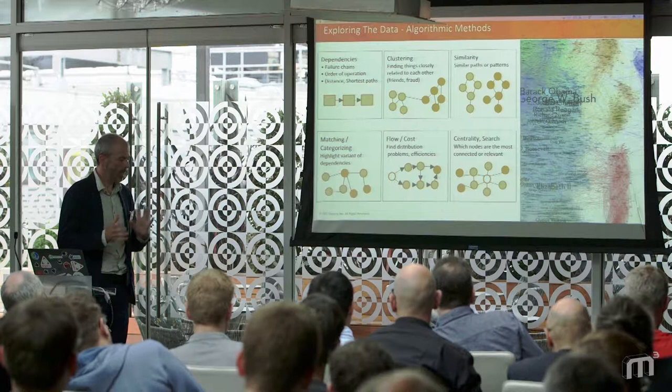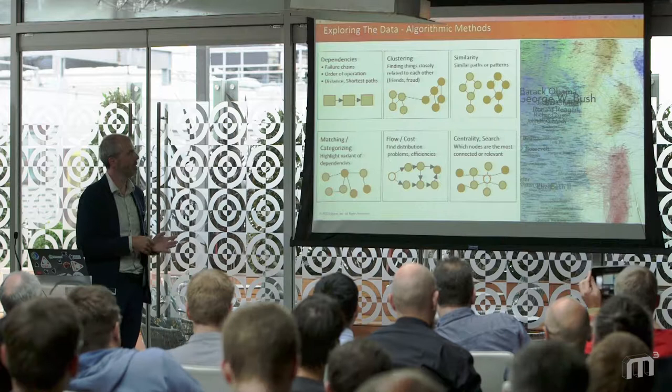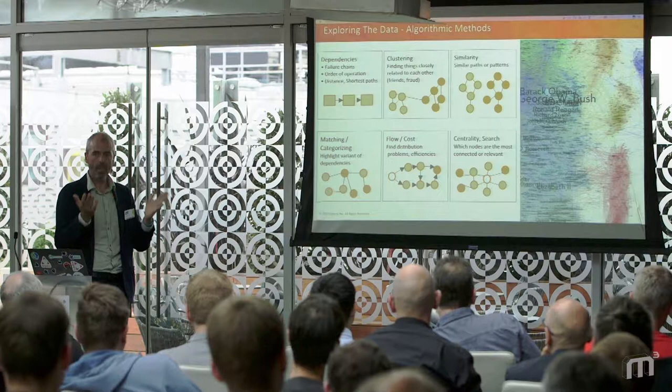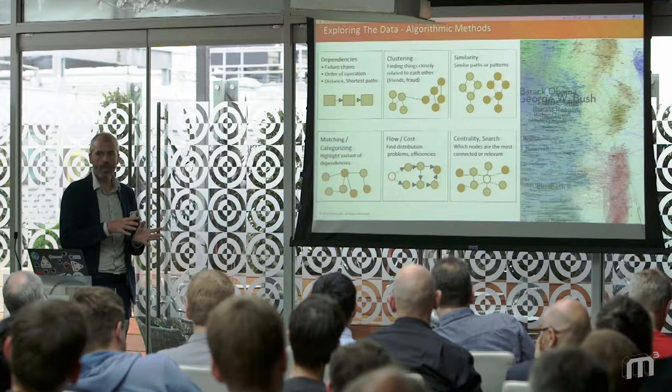There's an entire separate branch of analytics to look at graphs, and some of these algorithms are extremely difficult to find. Similarity, for example — matching two graphs and finding out if they are actually the same — is actually NP-hard. So different approaches are used to approximate that.